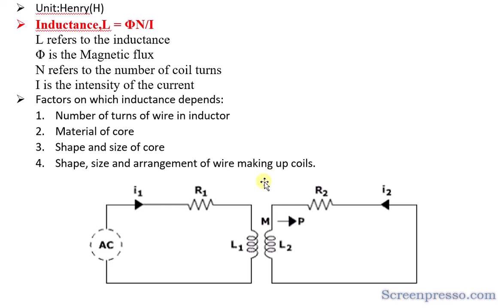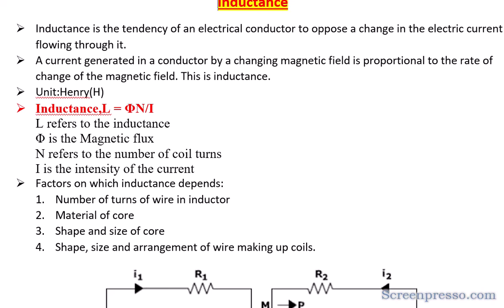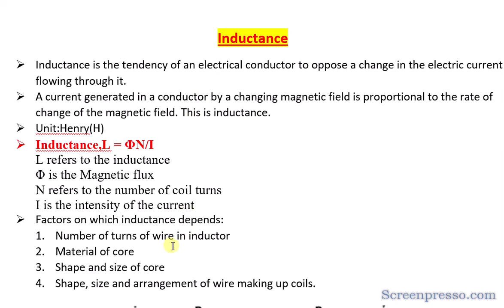When inductance is generated with respect to both L1 and L2 together, it is denoted by M, which is mutual inductance. There are two types of inductance: self-inductance and mutual inductance, which I will cover in detail in the next session. This is the main summary of inductance — what it is, how it is measured, and what factors it depends on. Please subscribe to my YouTube channel and press the bell icon for the latest updates.